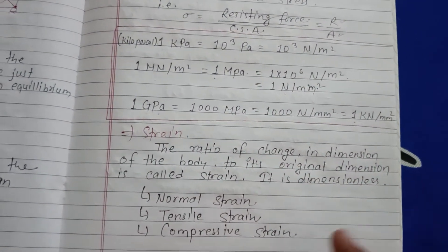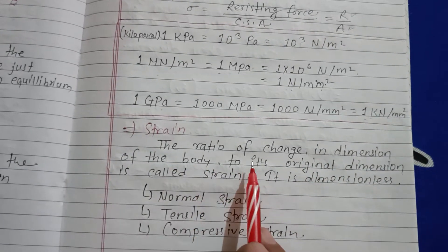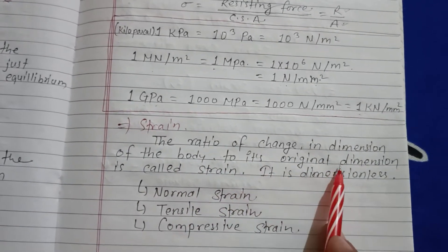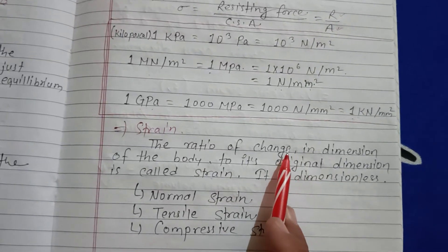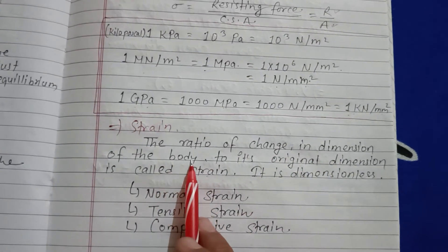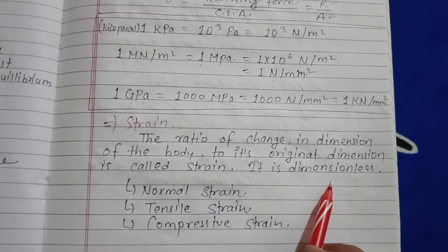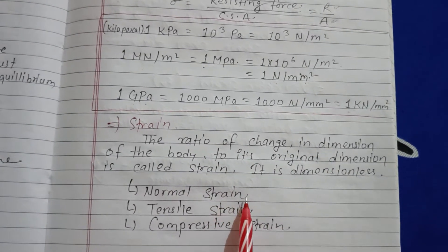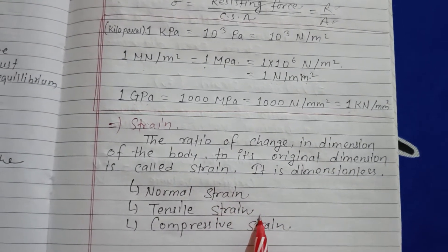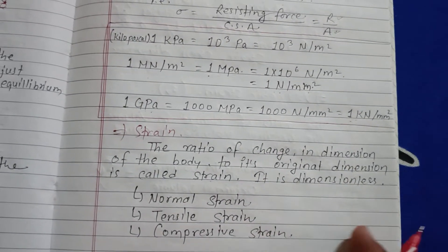Strain: the ratio of change in dimension of the body to its original dimension is called strain. It is dimensionless — strain has no units. Types of normal stress include tensile stress and compressive stress.